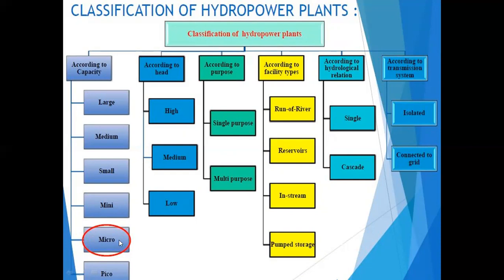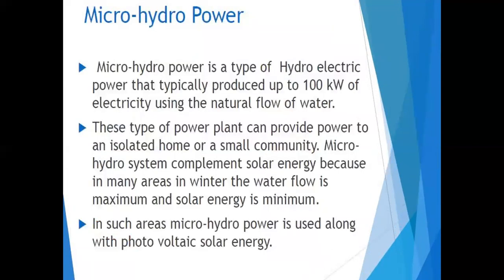Our topic is the micro hydro power plant, where generated power is from 5 kilowatts to 100 kilowatts. Micro hydro power is a type of hydroelectric power that typically produces up to 100 kilowatts using the natural flow of water. It can provide power to an isolated home or a small community.